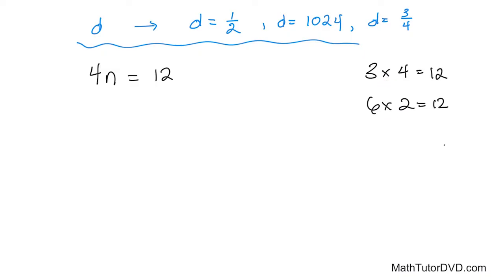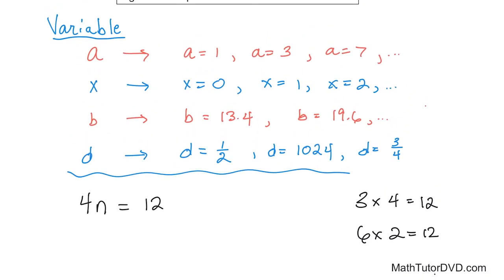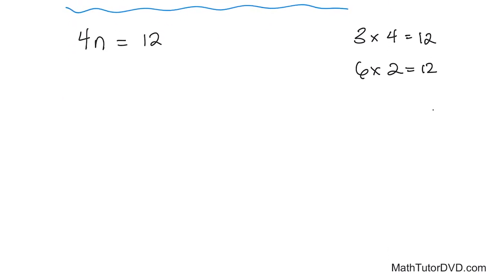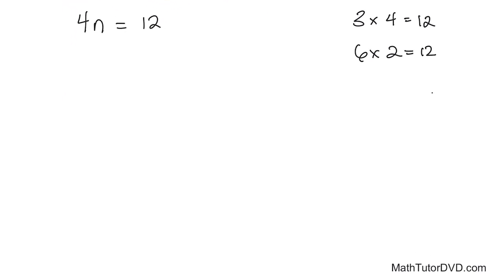Well, we don't use this letter x to be multiplication in algebra because we're using variables. Remember we talked about this variable up here. This variable x is used quite often in algebra. So you'll get confused if you start using x for multiplication. So in algebra, what we basically do is we drop the multiplication symbol. So if you see a letter and a number together, you always know they're multiplied.